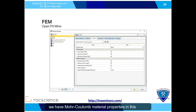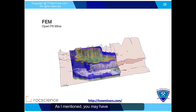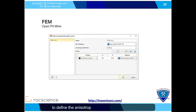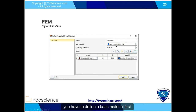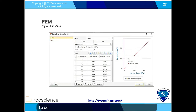You define your material properties. We have Mohr-Coulomb material properties — in this model you define the cohesion, friction angle, and other parameters. As mentioned, you may have anisotropic cases. We had one anisotropic material that we use with a surface to define the anisotropic material. Using the surface option, you have to define a base material first, which is your rock mass, and then define your bedding material. Then assign these parameters to define the bedding and base, using the shear-normal function.